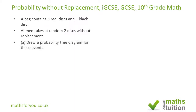We are asked to draw a probability tree diagram for these events. Starting with a red disk: the probability of picking a red disk the first time round is three over four, because we have three red disks out of four disks in total. Similarly, the probability of picking a black disk first will be one over four, because there is only one black disk and four disks in total.